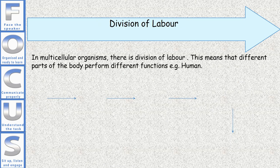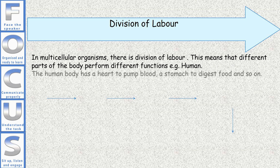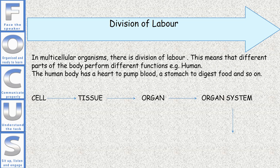Division of labor. In multicellular organisms, there is division of labor. This means that different parts of the body perform different functions. For example, the human body has a heart to pump blood, a stomach to digest food, and so on.